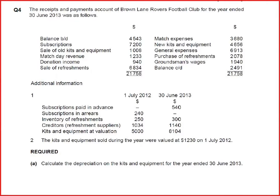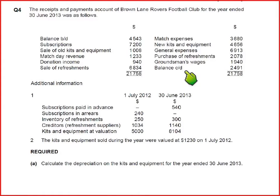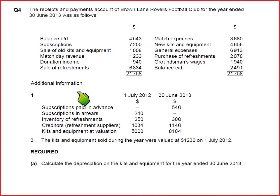Then we have match expenses, which we have already discussed. We have bought new kits and equipment — these are non-current assets. Then there are general expenses. We have purchased some refreshment needs and paid our suppliers. Then there are groundman wages — simple wages for the club. Then there is balance carried down: if the balance carried down comes on the credit side, the balance brought down comes on the debit side.